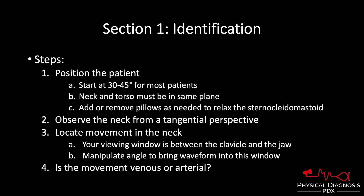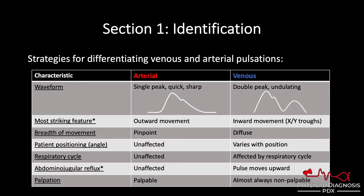The final step: after you've located movement, you have to decide — is that movement venous or arterial? There are a host of strategies. The waveform itself can be quite revealing. The arterial pulse has a single peak that is quick and sharp. The venous pulse is double and undulating in nature, with a soft rise and fall. The most striking feature of the arterial pulse is the outward movement — what goes out comes back passively and gradually; it's the outward movement that catches your eye.